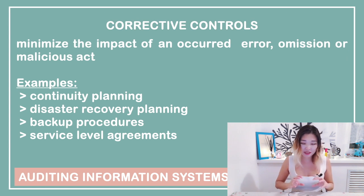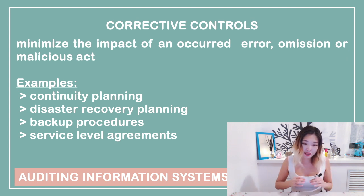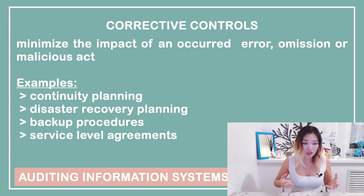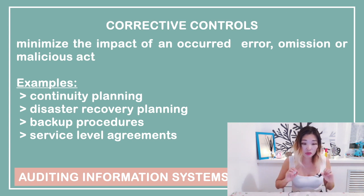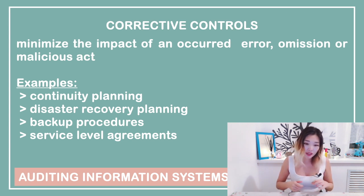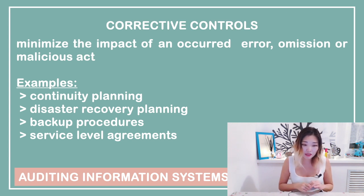Corrective controls help to minimize the impact of an occurred problem, which may be a system error, human mistake, malicious act, etc. Some examples include business continuity planning, disaster recovery planning, contingency planning, incident response procedures, backup procedures, and service level agreements.